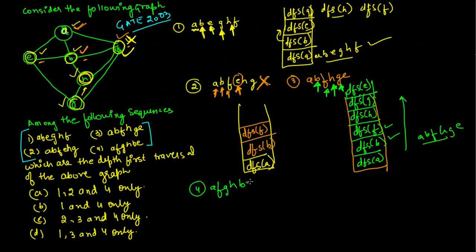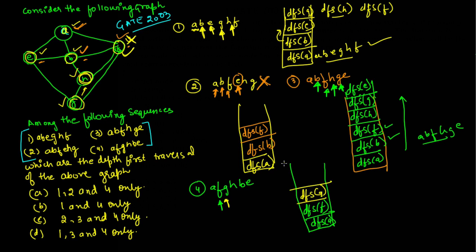Now let us check sequence number four: A, F, G, H, B, and E. Initially we call DFS on A; the adjacent vertices are E, B, and F. Here we visit F, so we call DFS on F. The adjacent vertices of F are A, B, H, and G; A is already visited, so we can choose among B, H, and G. Here we visit G, so we call DFS on G. The adjacent vertices of G are E, H, and F; F is already visited, so we choose between E and H — here we choose H, so we call DFS on H.